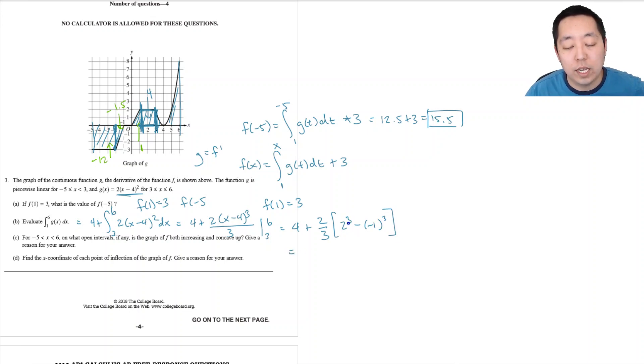2 cubed is 8, negative 1 cubed is negative 1, 8 plus 1 is 9, so it's 4 plus 2 thirds times 9, that's 3, 6, that's 10.